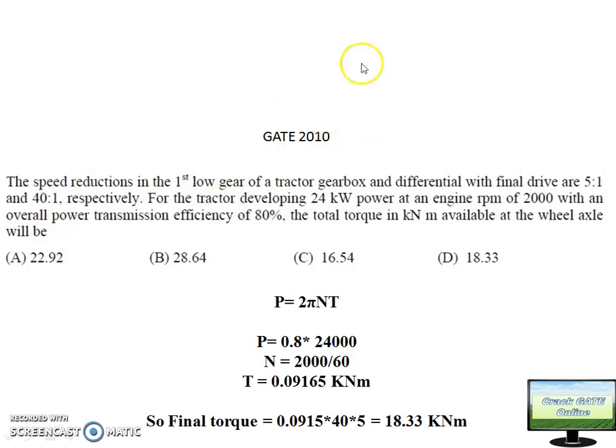Here it is given that with gearbox we are getting torque multiplication of 5 to 1 and with differential and final drive we are getting 40 to 1. So if this much torque is getting generated, it will be multiplied by 5 times at the transmission and then 40 times at the differential and final drive. So finally we will get 18.33 kNm. That is option D.